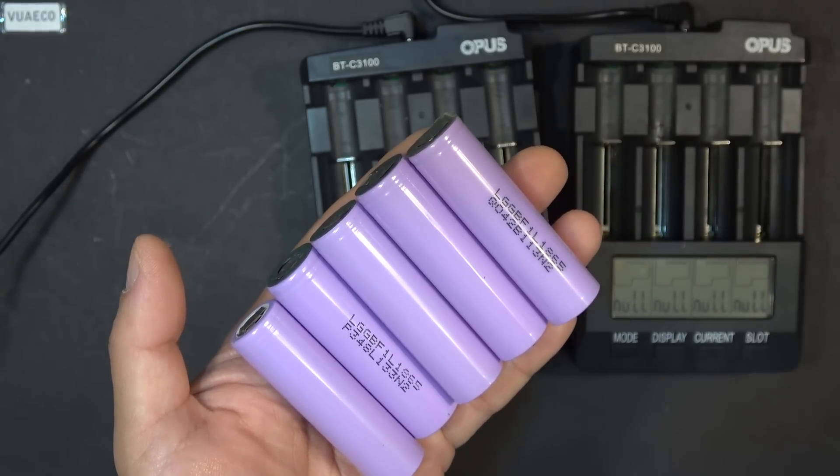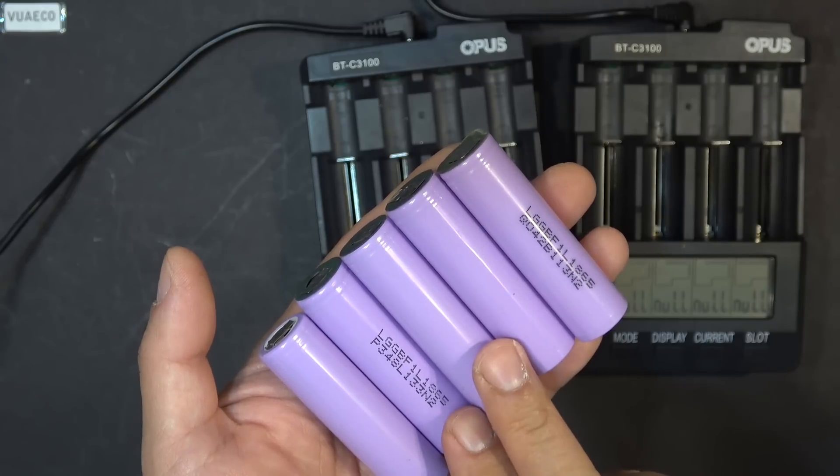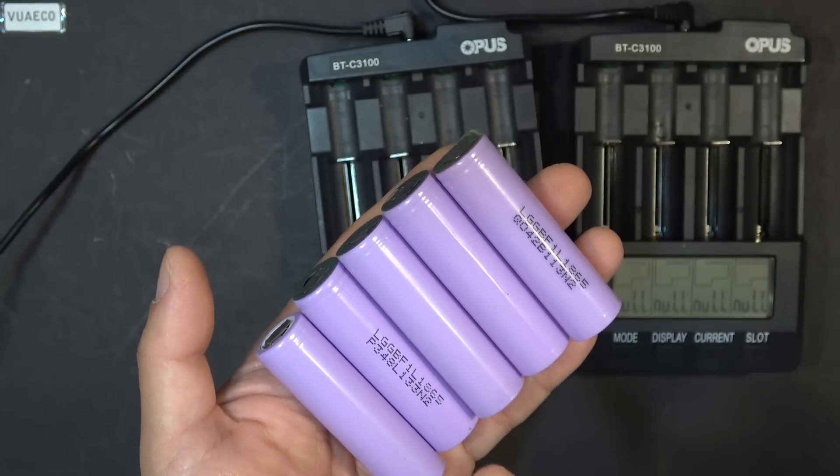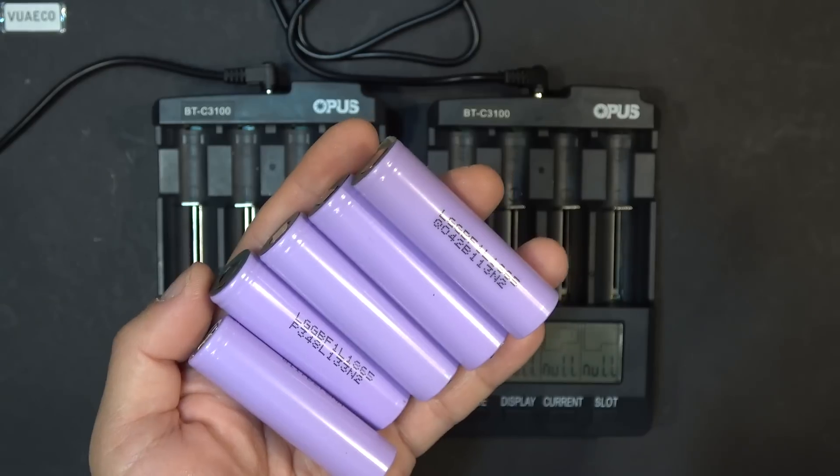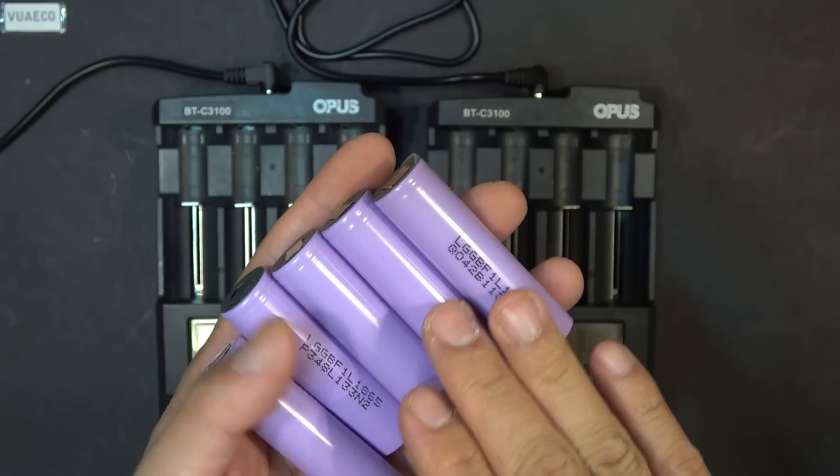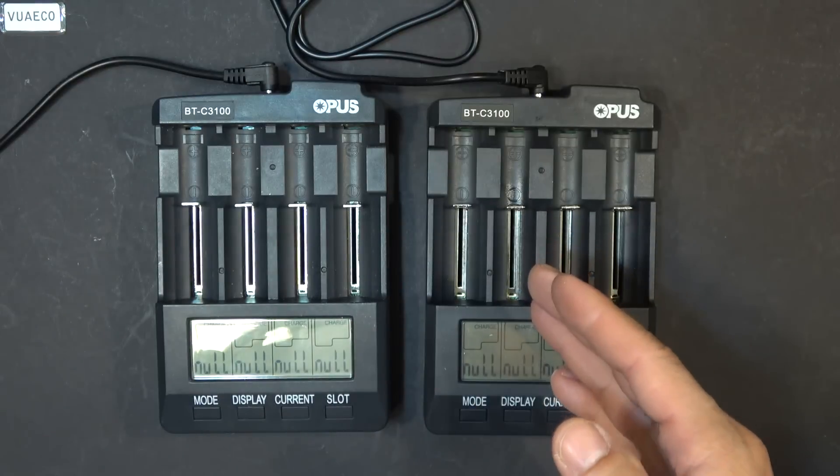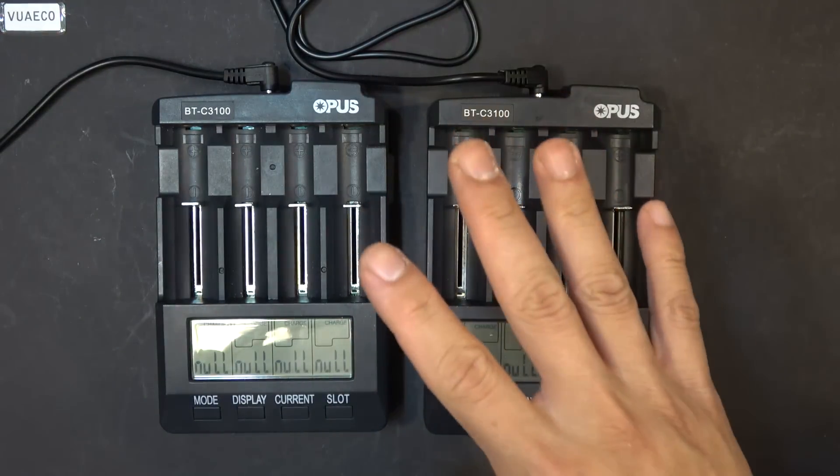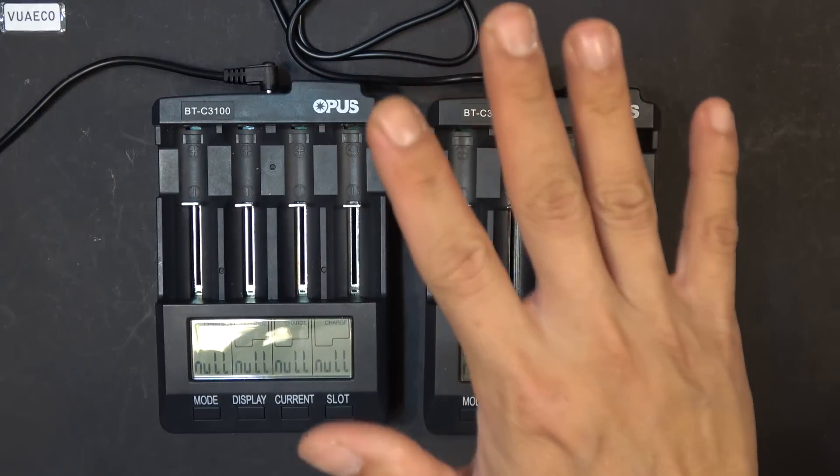So in this test, I also want to find out whether or not these 18650 cells are actually 3300 mAh as advertised by LG. So now let's start the test. I've got 5 cells here, and the reason why I choose 5 cells is because this charger will give me 5 options to discharge the cell at 5 different rates.